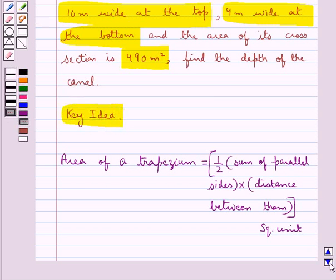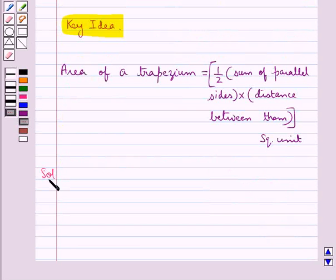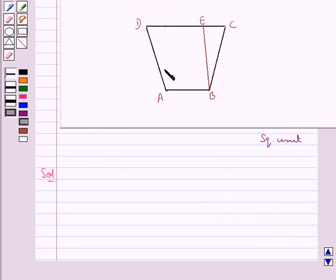Now let's proceed with the solution. Consider this canal ABCD of trapezium shape. Its top, that is DC, is 10 meters wide. Its bottom AB is 4 meters wide.